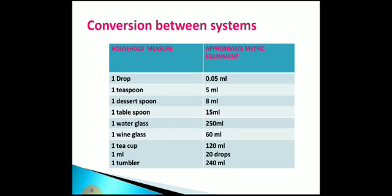In the conversion system, the household measure with approximate metric equivalents: 1 drop is equal to 0.05 ml; 1 teaspoon is equal to 5 ml; 1 dessertspoonful is equal to 8 ml; 1 tablespoonful is equal to 15 ml; a glass of water is equal to 250 ml; a teacup is equal to 120 ml; 1 ml is equal to 20 drops; and 1 tumbler is equal to 240 ml.